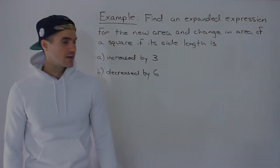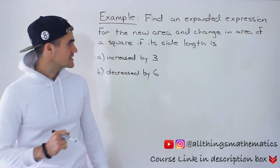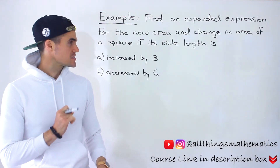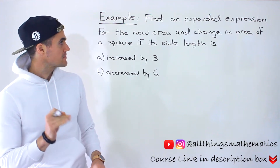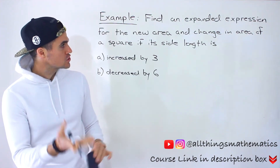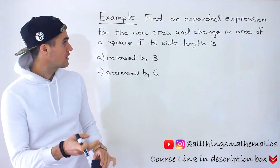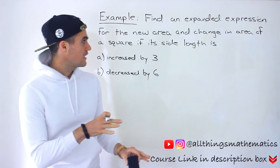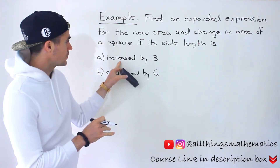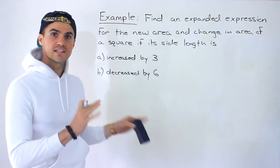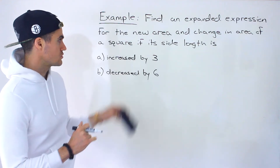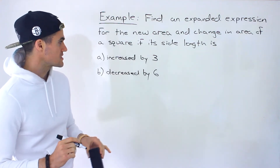Welcome back everyone, Patrick here. In this next video we have a word problem dealing with special products. We have to find an expanded expression for the new area and change in area of a square if its side length is either increased by three or decreased by six. These are two separate scenarios.